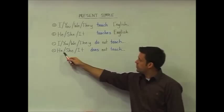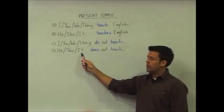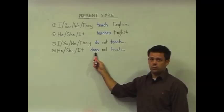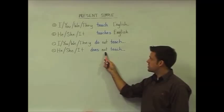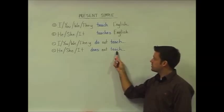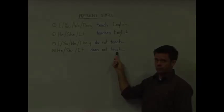However, for he, she, and it, we have to conjugate our auxiliary verb into 'does.' We still use 'not,' and we still keep the base form of the verb.